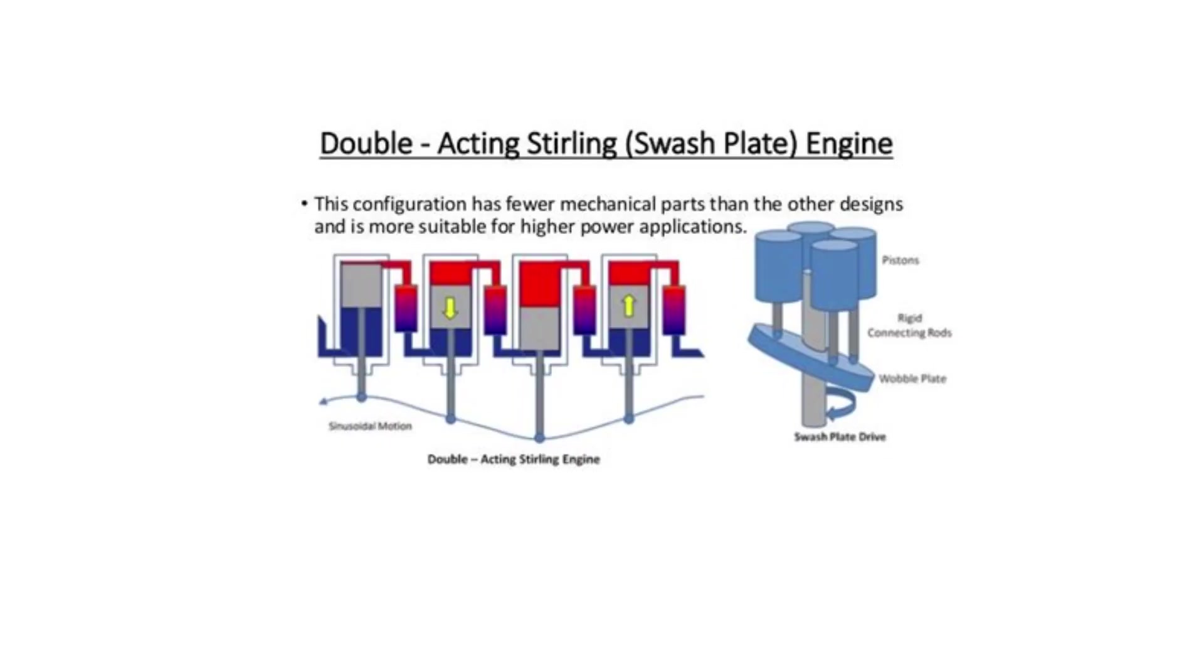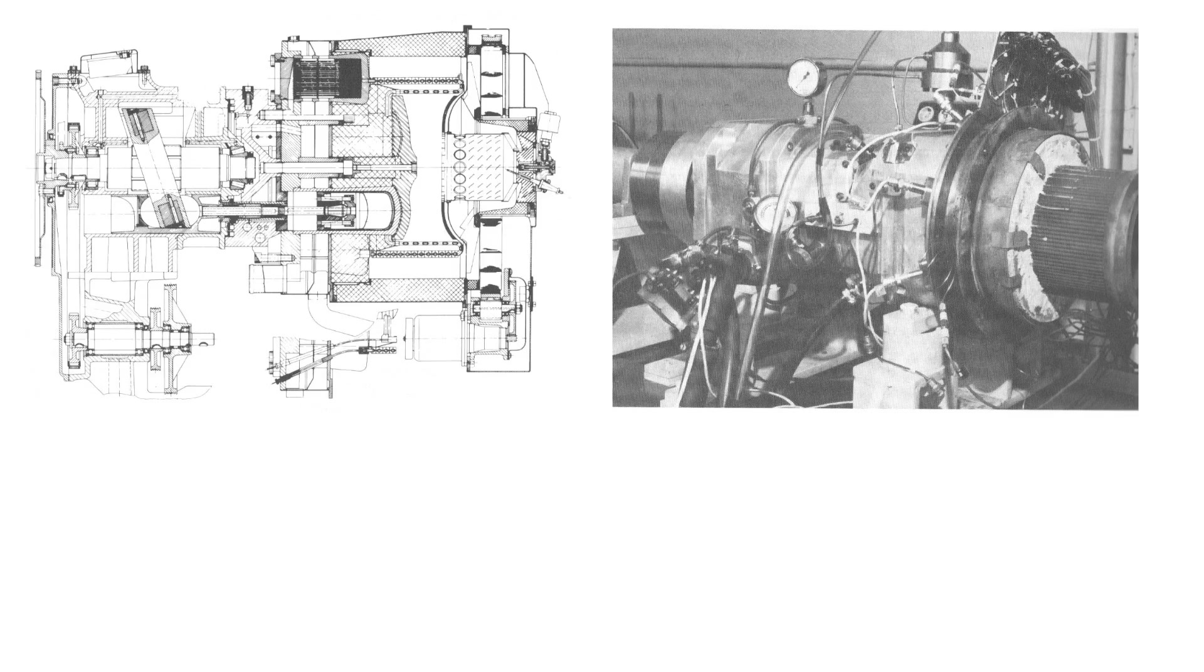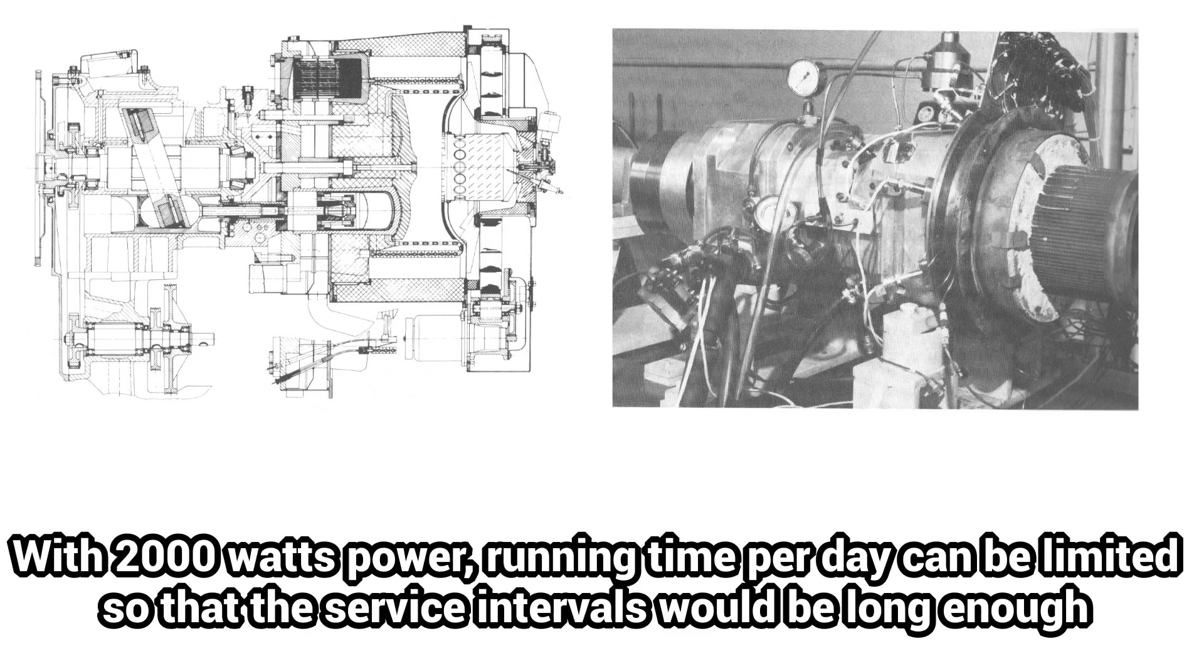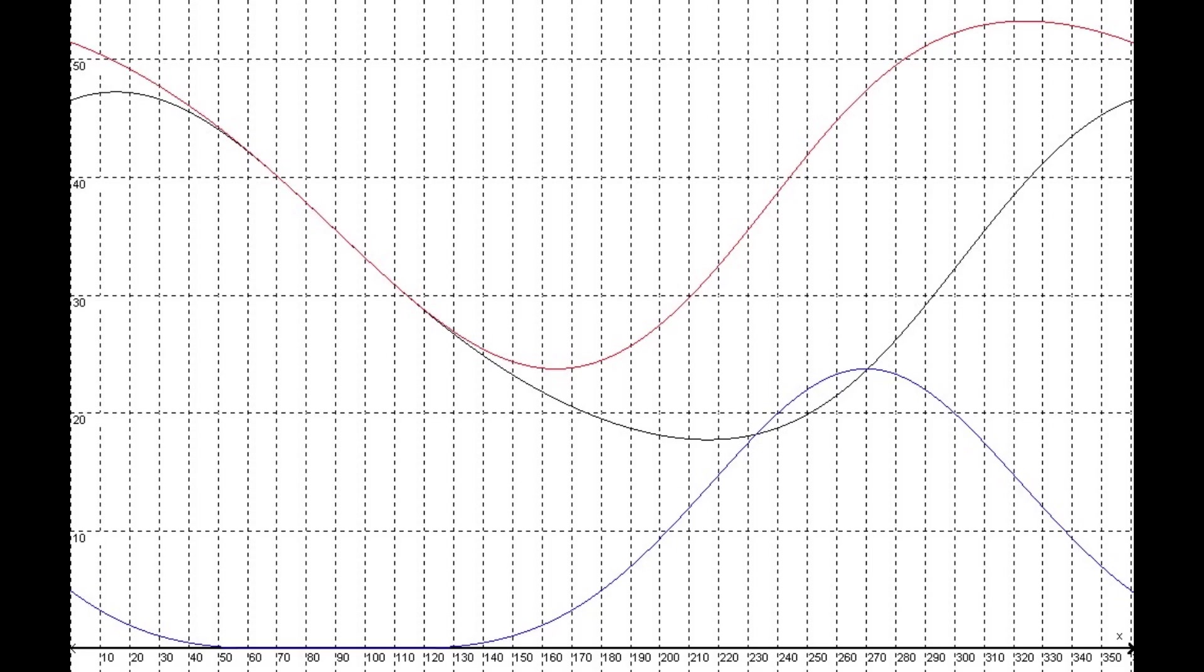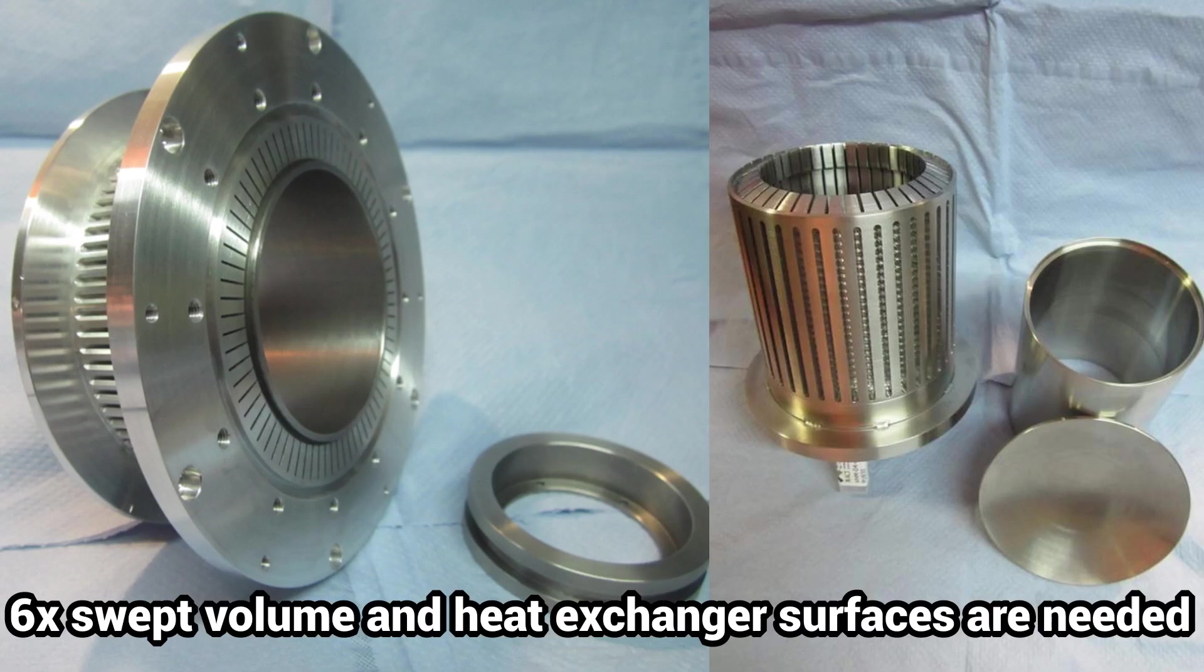An extreme increase in performance could then be considered. With an output of approximately 2000 watts the engine would only have to run for around three hours a day. To achieve this, the working volume and correspondingly the heat exchanger surfaces would have to be increased about six-fold.